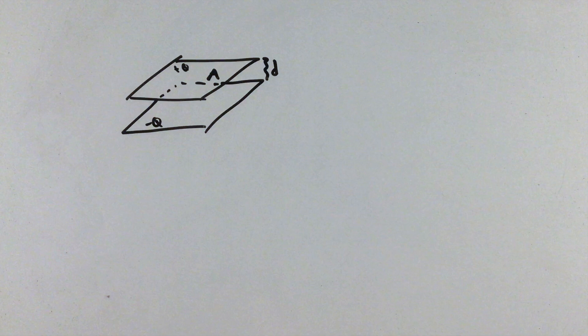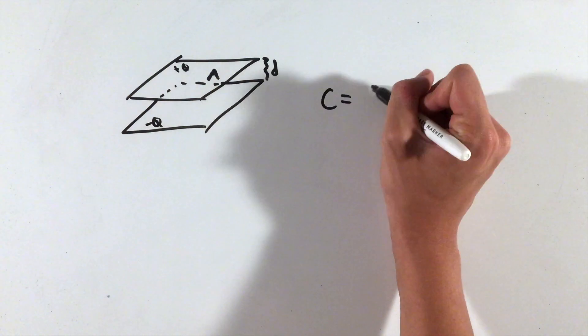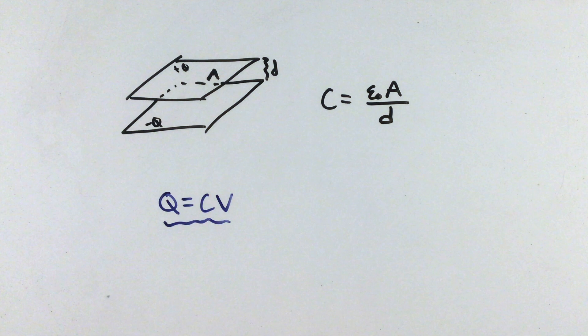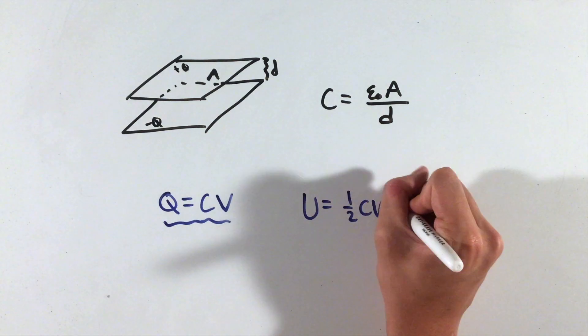Though the following equations can be derived and used more in-depth in AP Physics C, the capacitance of a parallel plate capacitor is given by this equation here. Most notably, the potential difference we learned about is related to the capacitance and the charge on the plates by this equation, as well as the energy stored in a parallel plate capacitor is given by this equation.